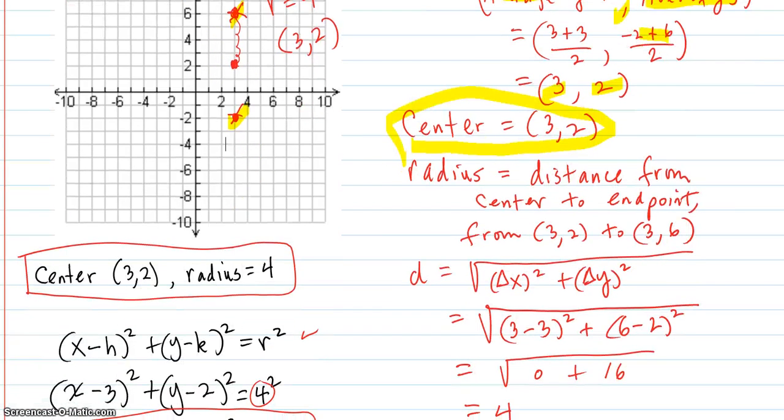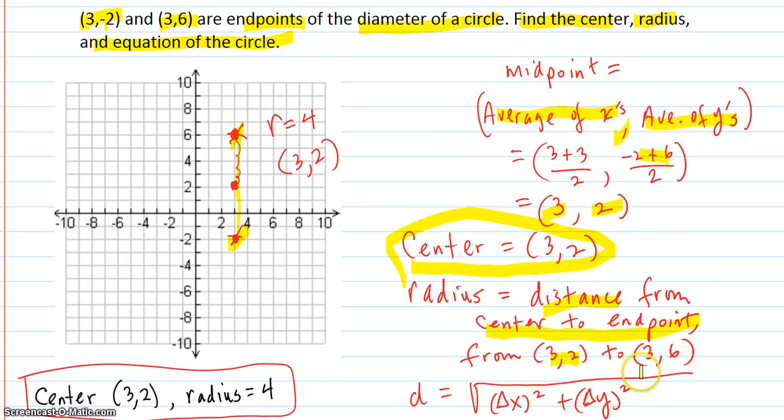And the radius would be the distance from the center to an endpoint. So from, say, (3, 2), the center, to one of the endpoints, which is, say, (3, 6).